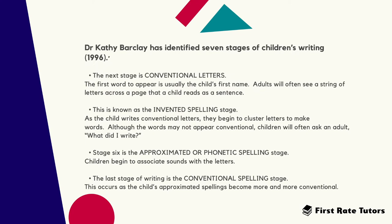The next stage is conventional letters. At this stage, the first word to appear is usually the child's first name. Adults will often see a string of letters across the page that a child reads as a sentence. This is known as the invented spelling stage, where the child writes conventional letters and begins to cluster letters to make words. Although the words may not appear conventional, children will often ask an adult, 'What did I write?'